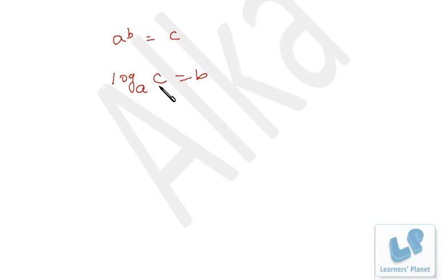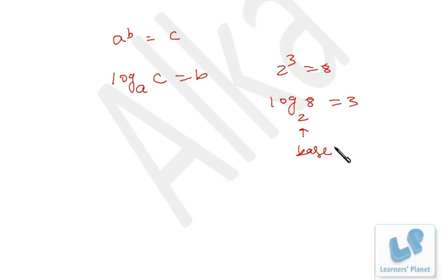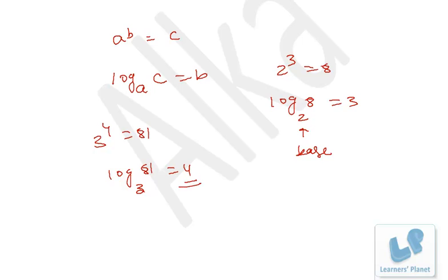First of all, we are going to discuss the different terms in logarithm. Suppose a raised to b is equal to c. So how do we write this expression in the case of logarithm? That's log_a(c) = b. We read that as: log c to the base a is b. Suppose 2 cubed is equal to 8 — then log 8 to the base 2 is 3. So this is the base of the logarithm, this is the index, and this is the value. Similarly, 3 raised to 4 is 81, so log 81 to the base 3 is 4.